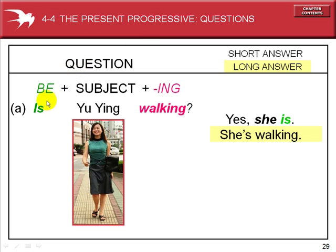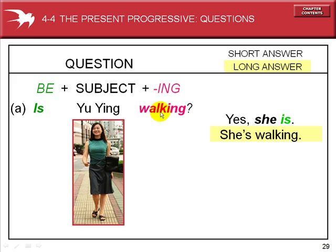To form a question, we start the sentence with the verb 'is' for one person. Her name is Yu Ying — she is the subject. Add the ing ending to the verb. Is Yu Ying walking? The verb 'walk' ends in two consonants — L and K are consonants — so we just add the ing ending.